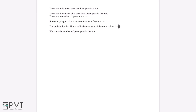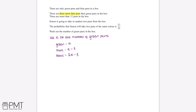The first thing we can do is put the number of green pens and the number of blue pens into algebraic form. We let x be equal to the number of green pens. Because there are three more blue pens than green pens, the number of blue pens will be x plus 3. Adding these together gives us the total number of pens in the box: 2x plus 3.